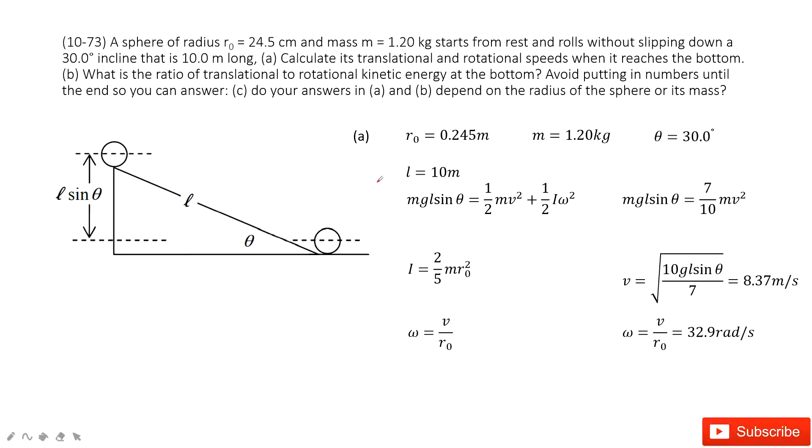In this chapter, we talk about rotational motion. In this system, you can see on this triangle at the top of the slope, we have a sphere.